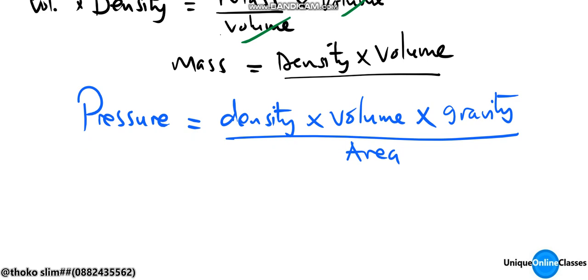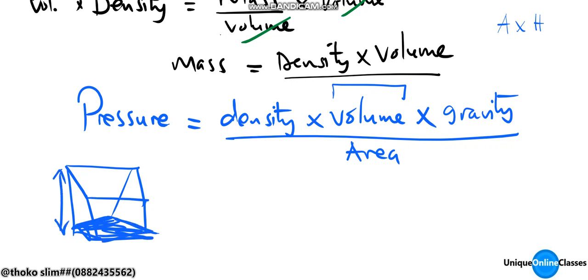The volume of a prism is given by area times perpendicular height. If we look at our cross-section here, the volume of a substance or solid is given by volume equals cross-sectional area times perpendicular height.